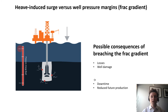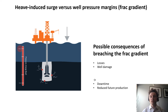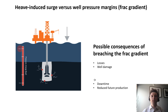The possible consequences of breaching the frac gradient — when the rig is moving downwards on the wave and the end of the drill string, completion string, or liner casing moves down inducing surge — are mud losses, or well damage if you frack the well, damaging the near-wellbore area. The ultimate consequences are downtime in case of mud losses or reduced future productivity of the well in case of well damage.